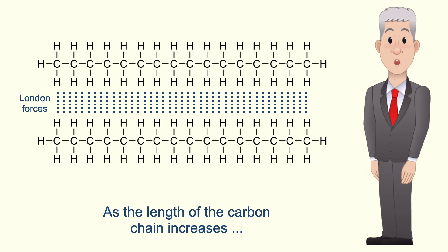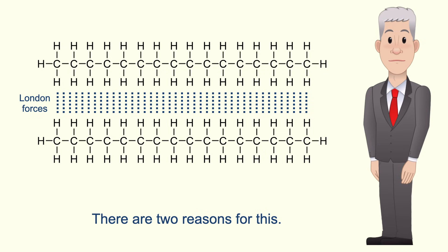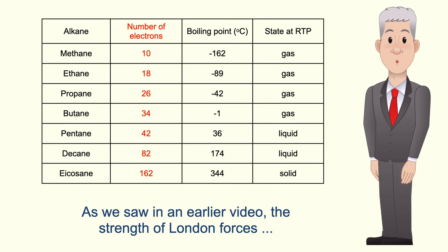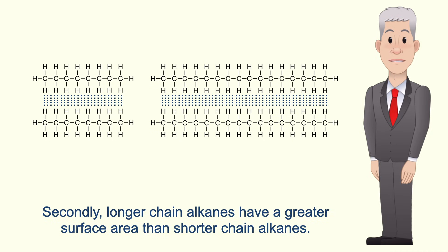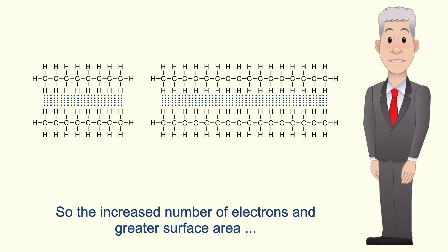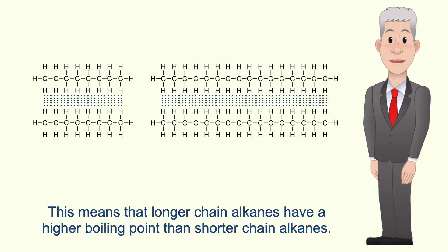As the length of the carbon chain increases, the strength of the London forces also increases, and there are two reasons for this. Firstly, longer chain alkanes have more electrons than shorter chain alkanes, and the strength of London forces increases as the number of electrons increases. Secondly, longer chain alkanes have a greater surface area, meaning there are many points along the molecules where they can form London forces. So the increased number of electrons and greater surface area means that London forces are greater in long chain alkanes, giving them a higher boiling point.